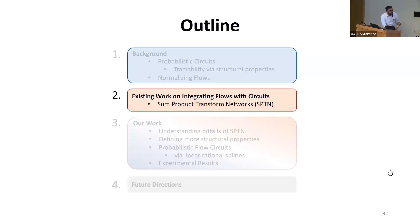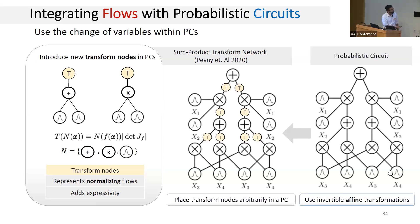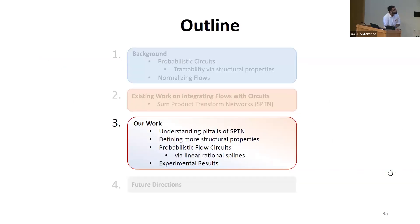Combining flows with PCs is one way to increase expressivity while retaining tractability, and this has been explored before. Integrating flows with circuits was first explored by Pevni et al., who introduced a new type of node within PCs called transform nodes. Intuitively, a transform node applies the change-of-variables formula: if defined over a PC node A, it uses A's distribution as the base distribution and applies the invertible transformation associated with the transform node. The resulting network was called the Sum-Product Transform Network (SPTN).